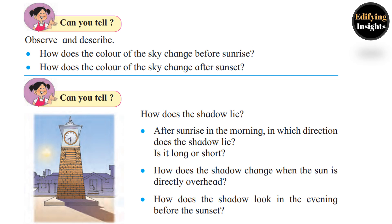Can you tell how the shadow lies after sunrise in the morning? In which direction does the shadow lie — is it long or short? After sunrise in the morning, the shadows are to the west and they are long. When the sun is directly overhead, shadows are exactly below the object and they are short.